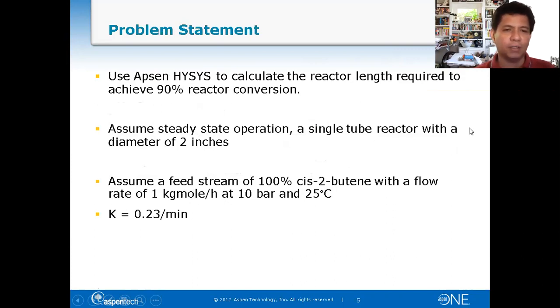This is what we'll simulate in Aspen HYSYS. Use Aspen HYSYS to calculate the reactor length required to achieve 90% reactor conversion. Assume steady state operation, a single tube reactor with a diameter of 2 inches. Assume a feed stream of 100% cis-2-butene with a flow rate of 1 kilomole per hour at 10 bar and 25 degrees Celsius, and K equals 0.23 per minute.